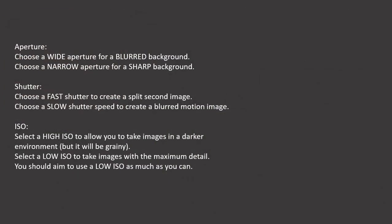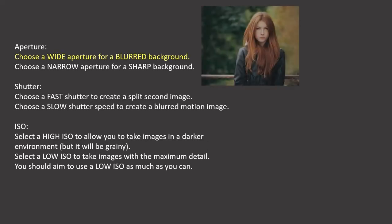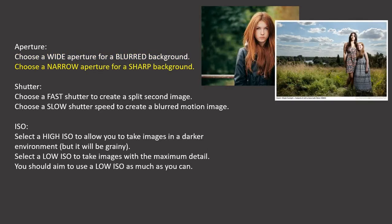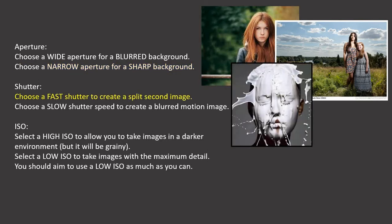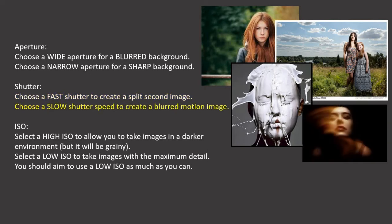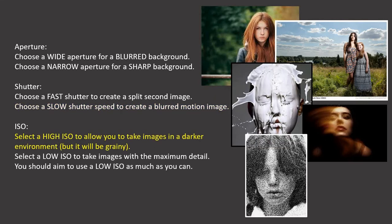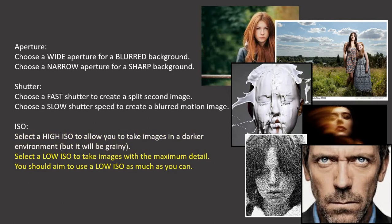To summarise how to use these different settings: choose a wide aperture for a blurred background, a narrow aperture for a sharp background. A fast shutter to create a split-second image, a slow shutter to create a blurred motion image. A high ISO allows you to take images in darker environments without the need of a tripod — possibly — but they will be grainy. A low ISO shot will keep everything sharp and at maximum detail, and this is what you should be aiming for most of the time.